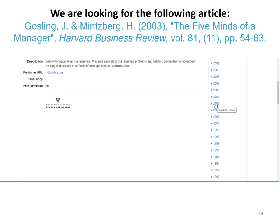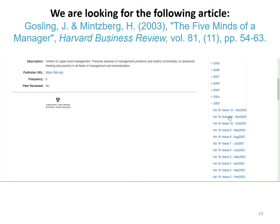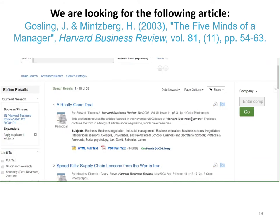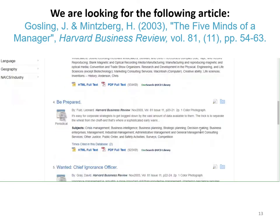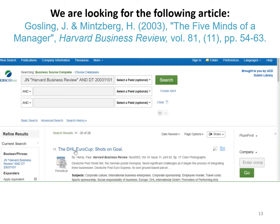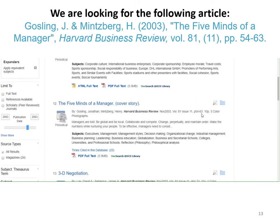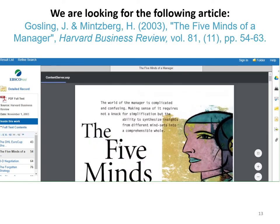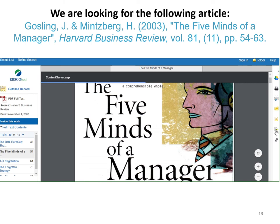Our article was published in 2003, so click into that. We know it's in volume 81 and issue 11, so click on that. Once you're in the specific issue of the journal, you can scroll down and use the page numbers to find your specific article. Our article was on pages 54 to 63. Bearing in mind, you might need to go to the next page of contents. Here's our article on pages 54 to 63, The Five Minds of a Manager, and there's the link to the PDF. There's our article and you can just read away. You also have some useful resources on the right hand side, such as the cite feature and emailing.